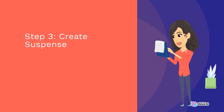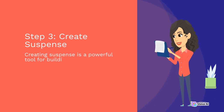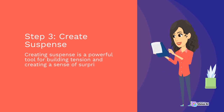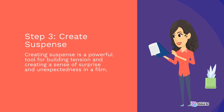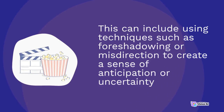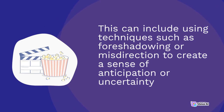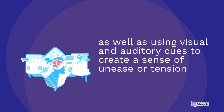Step 3 – Create Suspense. Creating suspense is a powerful tool for building tension and creating a sense of surprise and unexpectedness in a film. This can include using techniques such as foreshadowing or misdirection to create a sense of anticipation or uncertainty, as well as using visual and auditory cues to create a sense of unease or tension.